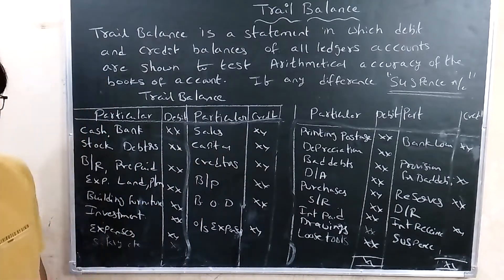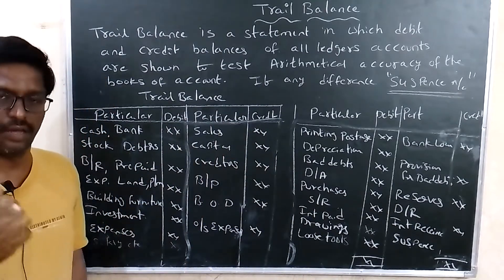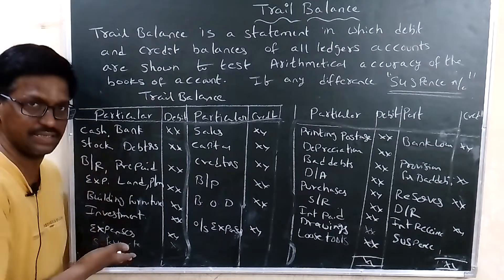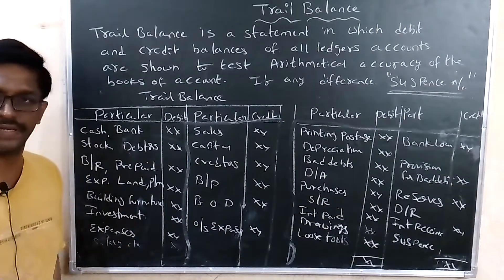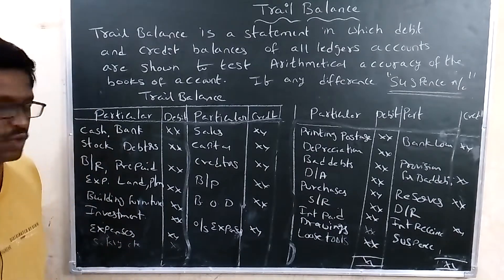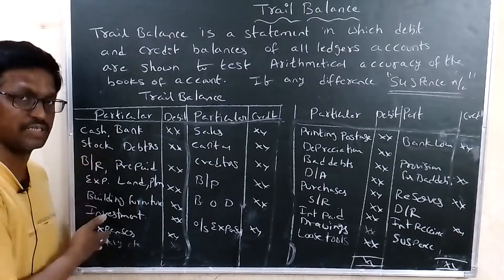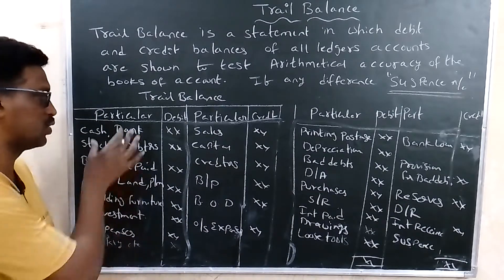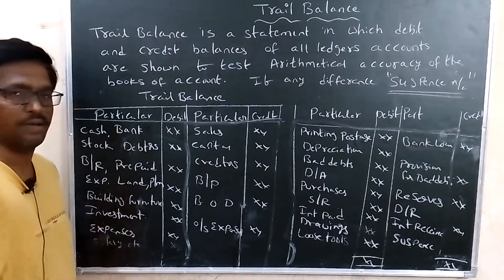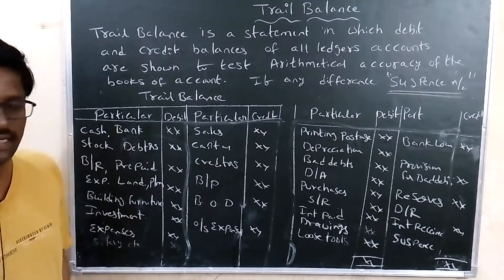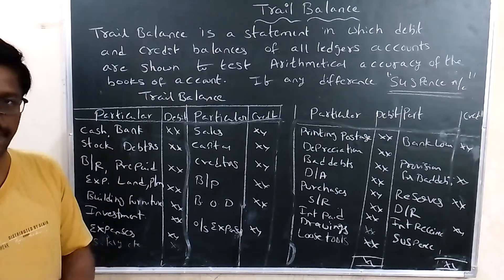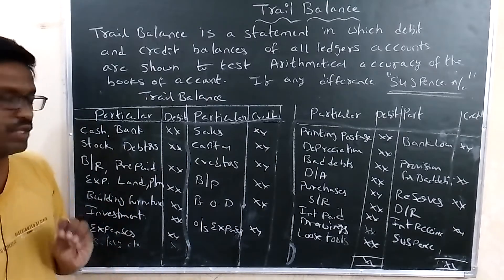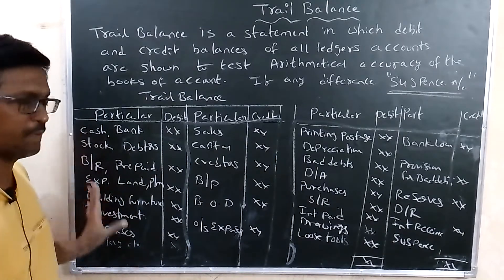The debit side includes real accounts. Assets always show debit balance. Expenses always show debit balance. Debit balances are shown in the trial balance on the debit side. Assets, expenses, and losses are shown in the debit balance.